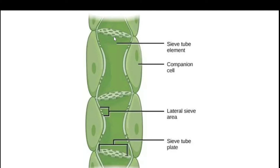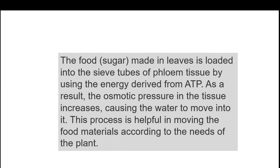There is a sieve plate present at the ends of the sieve tube, and it is perforated. Phloem is a long tube made up of many cells joined end to end, and these are called sieve tubes. The end walls of phloem cells have sieve plates. The companion cell, present just beside the sieve tube, has a nucleus and other cellular organelles. The food made in the mesophyll of a leaf enters the sieve tubes, which are interconnected, and once the food reaches phloem it is transported to all other parts of the plant.